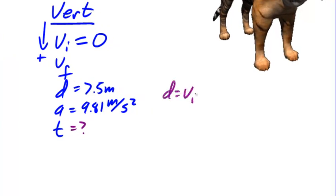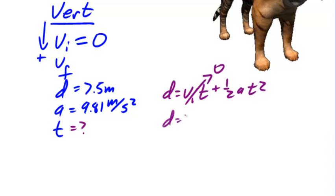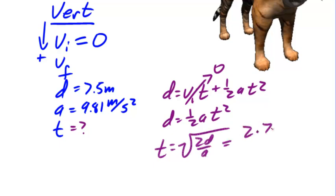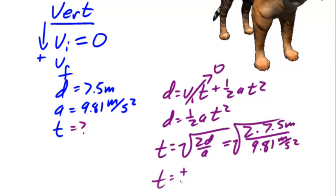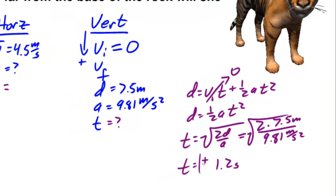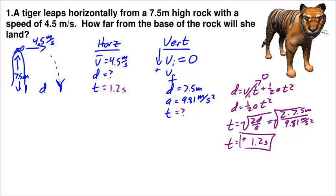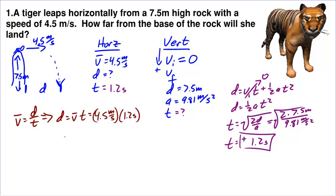We can use the equation D equals Vi·T plus ½AT². Since Vi is 0, that term goes away, giving D equals ½AT². Solving for T: T equals the square root of 2D over A, or the square root of 2 times 7.5 meters over 9.81 meters per second squared, which gives T equal to about 1.2 seconds. We plug that into our horizontal table and use D equals V·T: 4.5 meters per second times 1.2 seconds gives D equals roughly 5.4 meters.